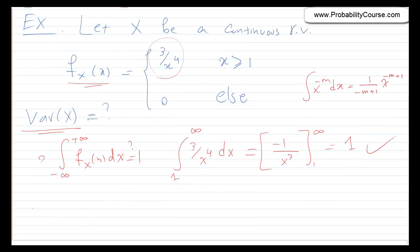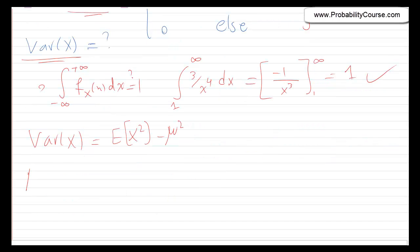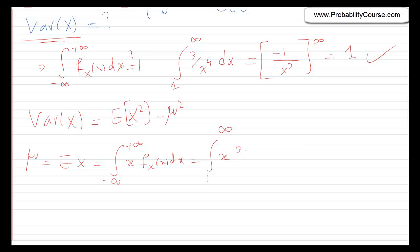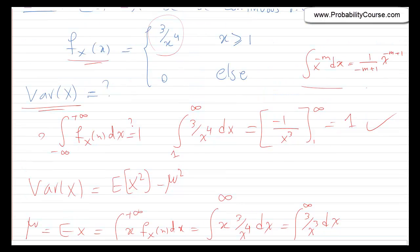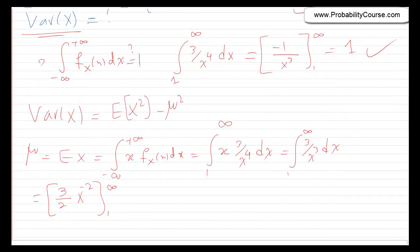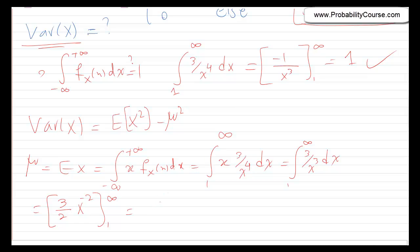Now let's find the variance. Variance of x equals expected value of x squared minus mu squared. So mu equals E[x] equals the integral from 1 to infinity of x times (3 over x to the 4) dx, which becomes the integral from 1 to infinity of 3 over x cubed dx. This equals negative 3 over 2 times x to the minus 2, evaluated from 1 to infinity, which gives 3 over 2. So mu equals 3 over 2.